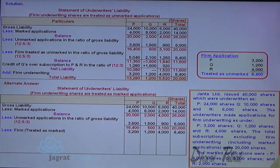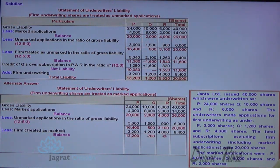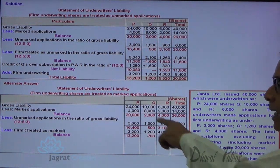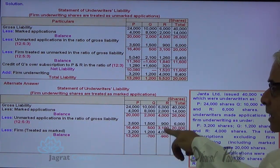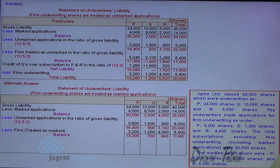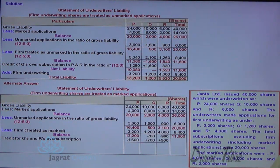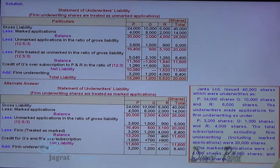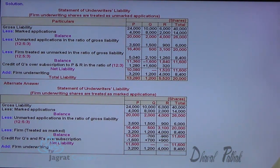Firm applications are treated as marked. The negatives are to be transferred — surplus of Q and surplus of R will be transferred to P. So plus 700 and 900 are transferred, showing how surplus is transferred to P. Net liability is 11,600. To this net liability, add the firm shares: P = 3,200; Q = 1,200; R = 4,000. This is how the total liability is worked out for this sum.